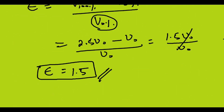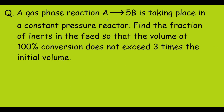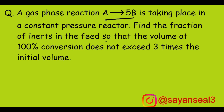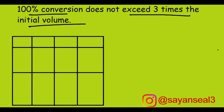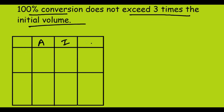Now let's solve another problem. A gas phase reaction A giving 5B is taking place in a constant pressure reactor. Find the fraction of inerts in the feed so that the volume at 100% conversion does not exceed three times the initial volume. We will make a table again with columns for A, I (inerts), and B (product).